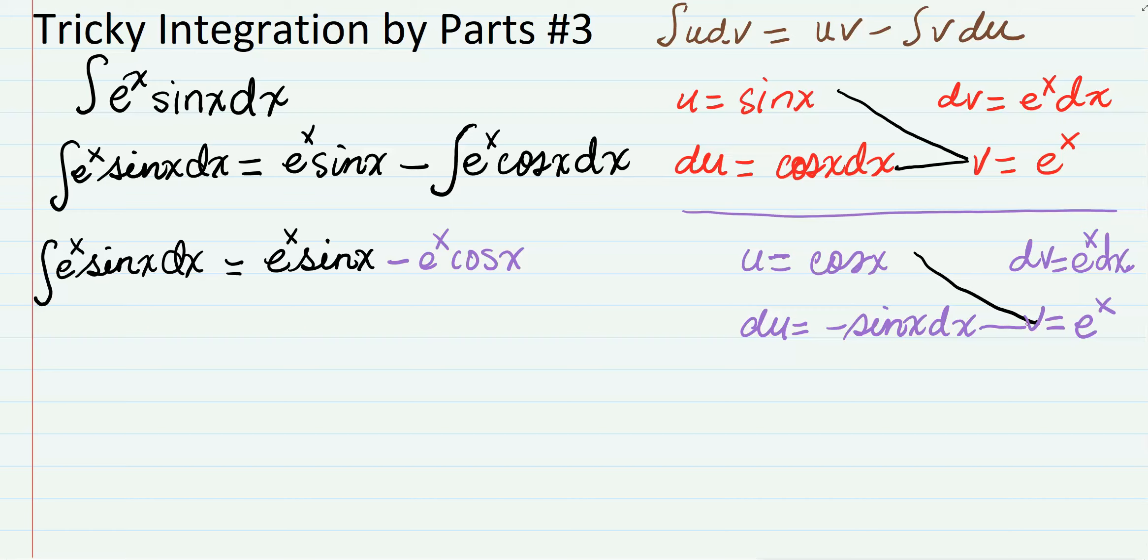But then minus minus minus, and then there's another minus in the front, so you still have a negative integral of e to the x sin(x). Now what do you notice? We should see that this right here is the same as the thing that we started out with.